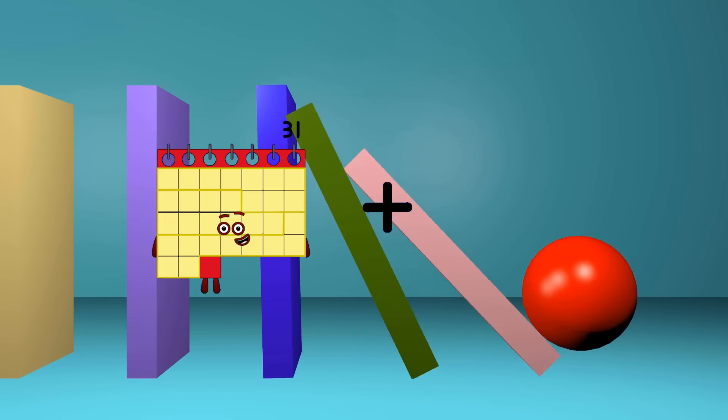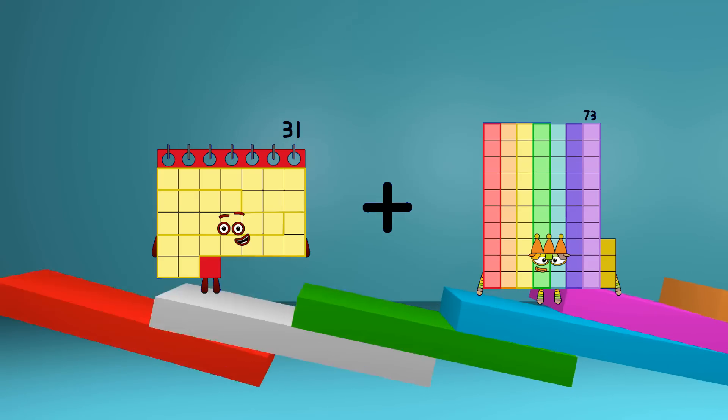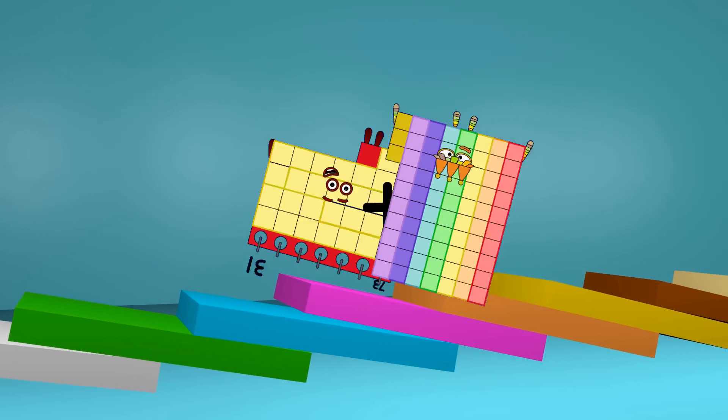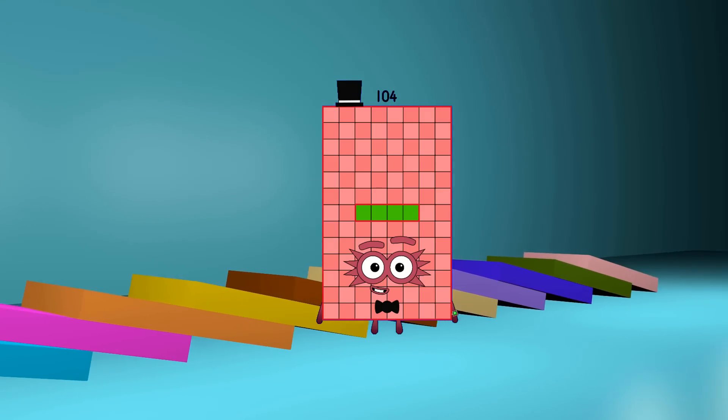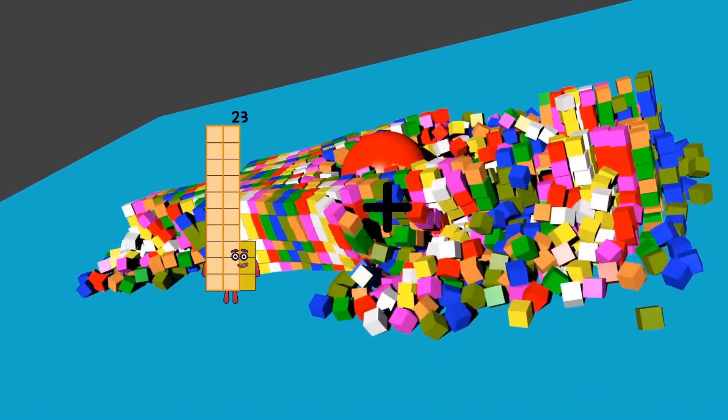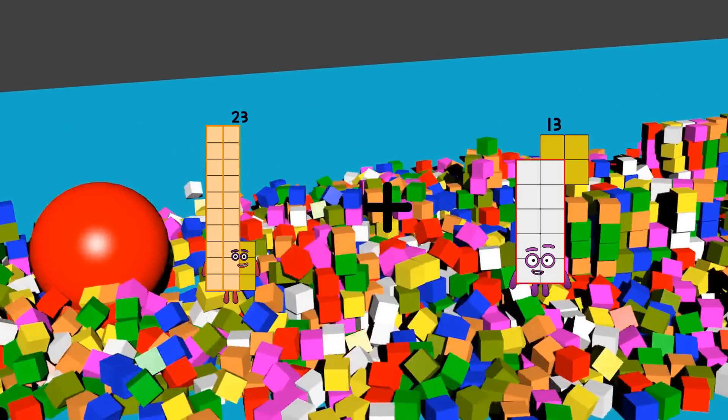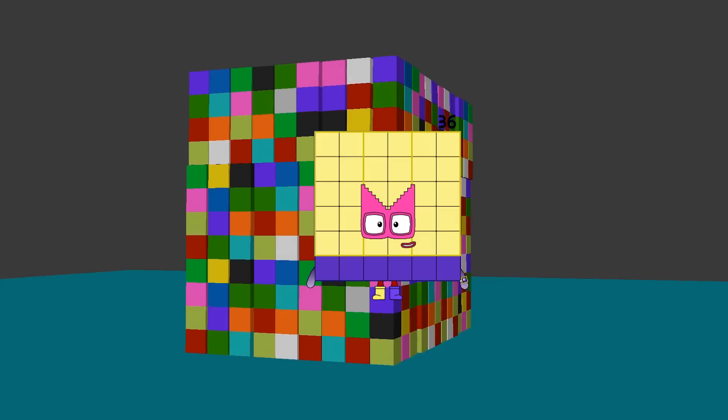31 plus 73 equals 104. 23 plus 13 equals 36.